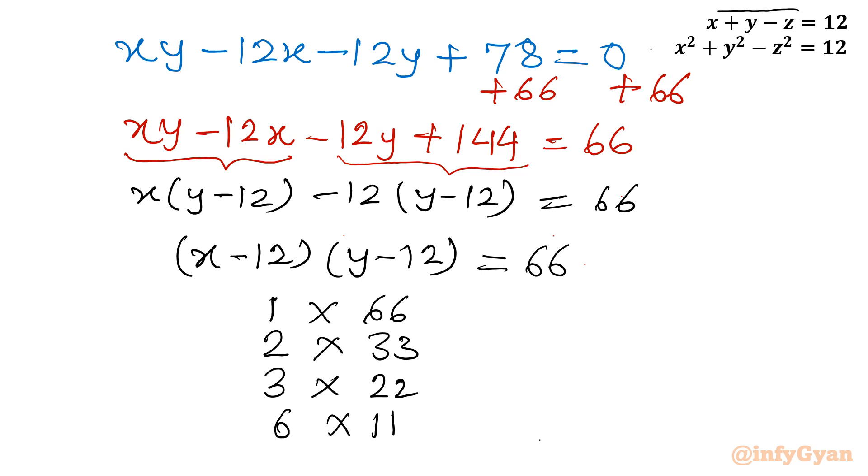Because our given equations are symmetrical in x and y, the answer will be swapped x and y values. Unnecessarily we should not write here. Now third case: minus 1 times minus 66, minus 2 times minus 33, minus 3 times minus 22, and minus 6 times minus 11 case. So negative values we will solve little later. So let me draw one chart.